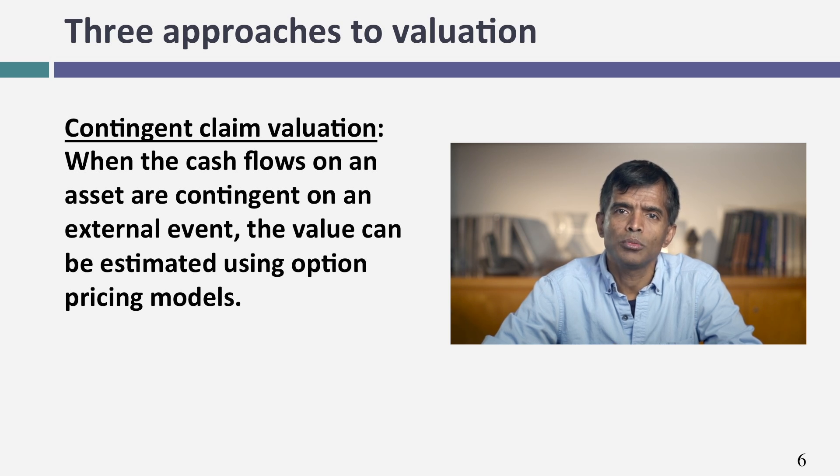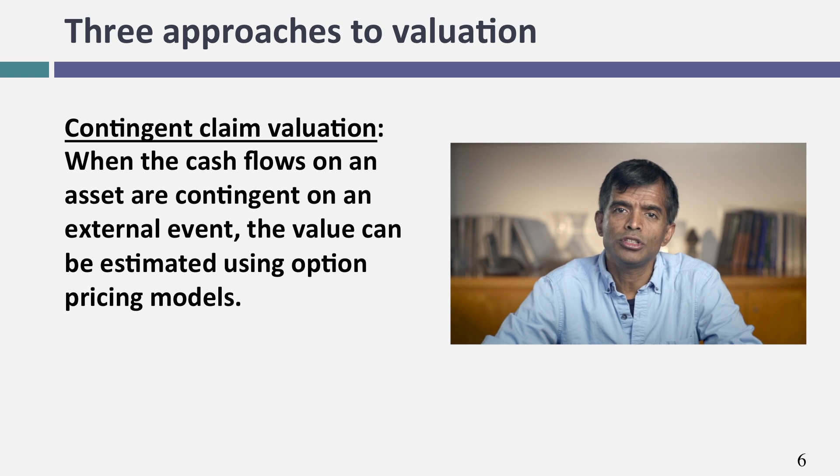There's a third approach used relatively infrequently: using option pricing models to value certain kinds of assets — specifically, assets whose value is contingent on something happening. A young biotechnology company with a blockbuster drug working through the FDA pipeline, or an oil company with undeveloped reserves that could be valuable if oil prices stay high or worthless if they drop — these are contingent assets. An option pricing model may help value those assets. This falls under the rubric of real options. So basically, there are three approaches: intrinsic valuation, relative valuation, and real options.